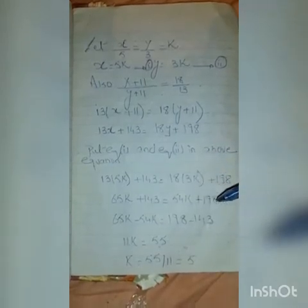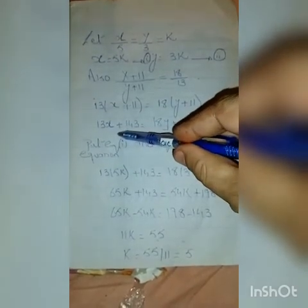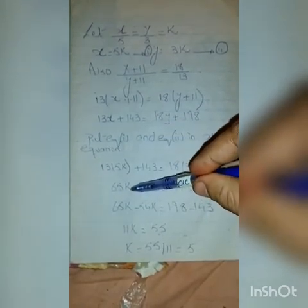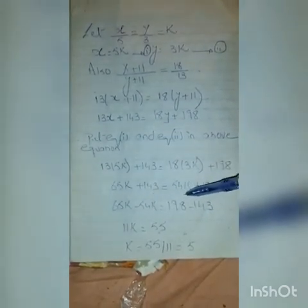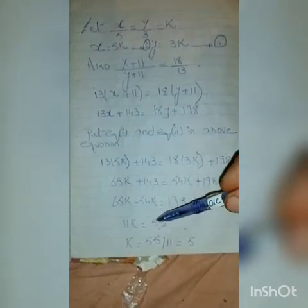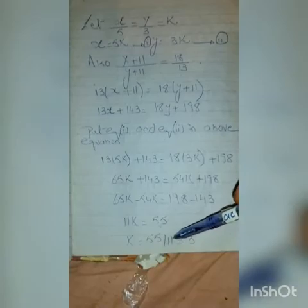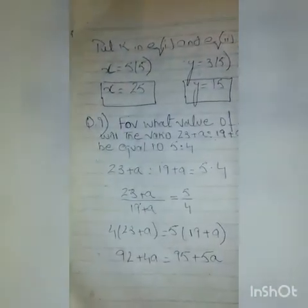We substitute x = 5k and y = 3k into the equation and solve. We get 65k + 143 = 54k + 198. Solving this gives 11k = 55, so k equals 55 upon 11, which equals 5.